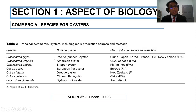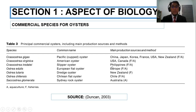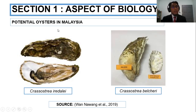This is the commercial species for oyster. According to Duncan 2003, the species I chose, Crassostrea iredalei, the sleeper oyster, has its main production coming from the Philippines. This indicates it is a suitable species to culture in Southeast Asia.